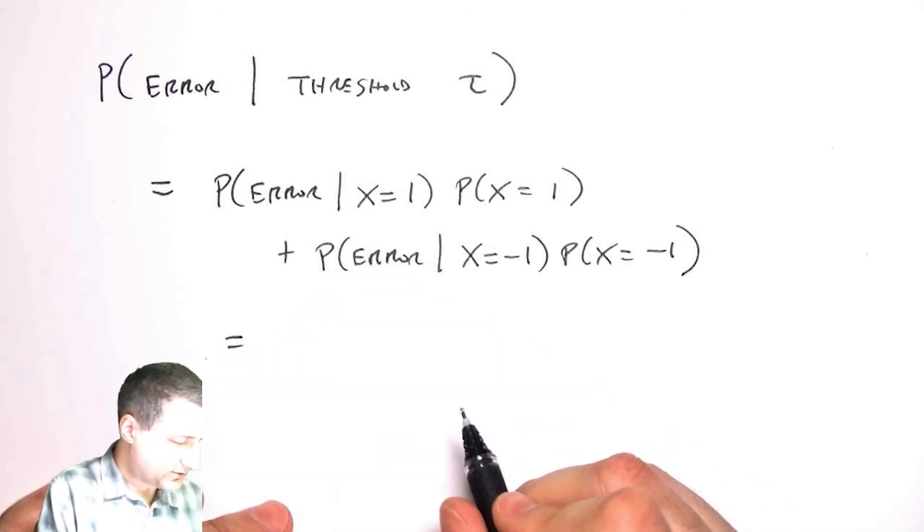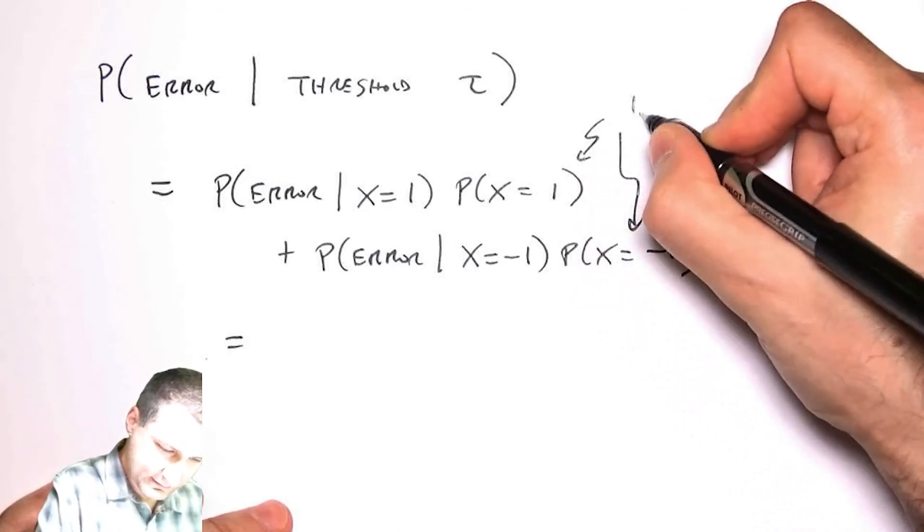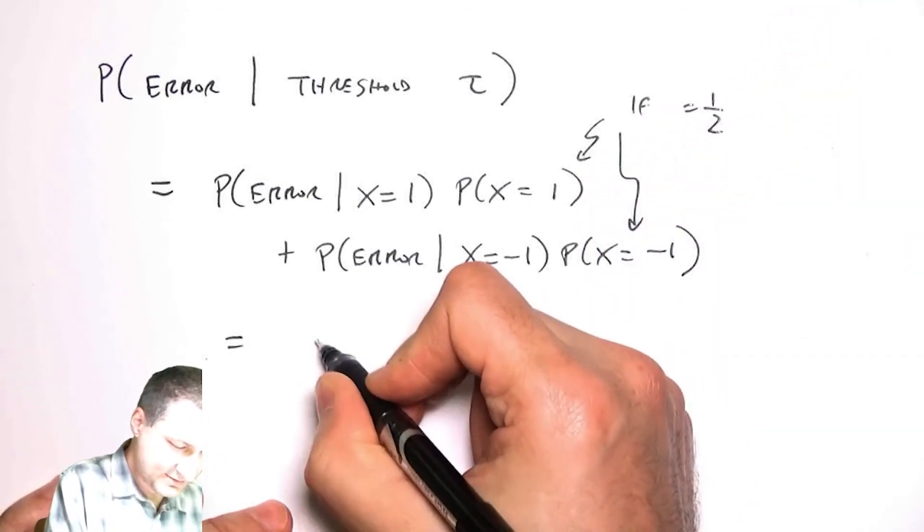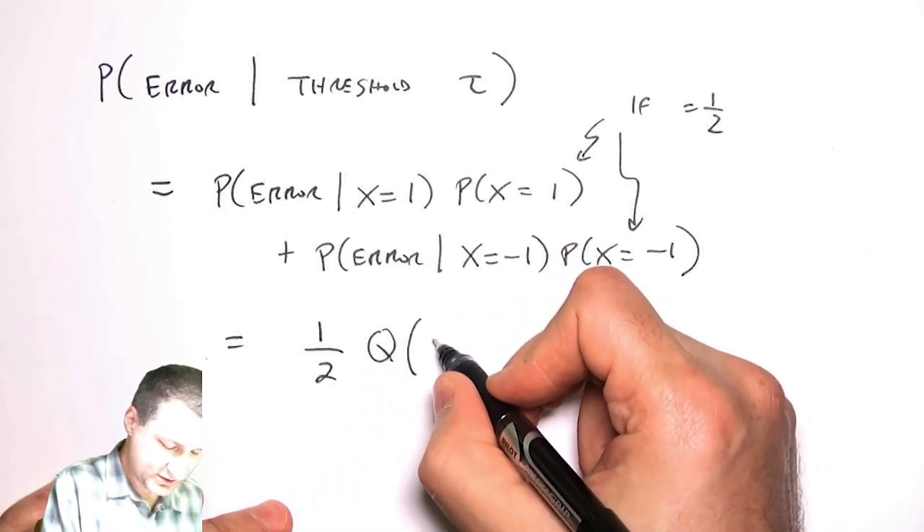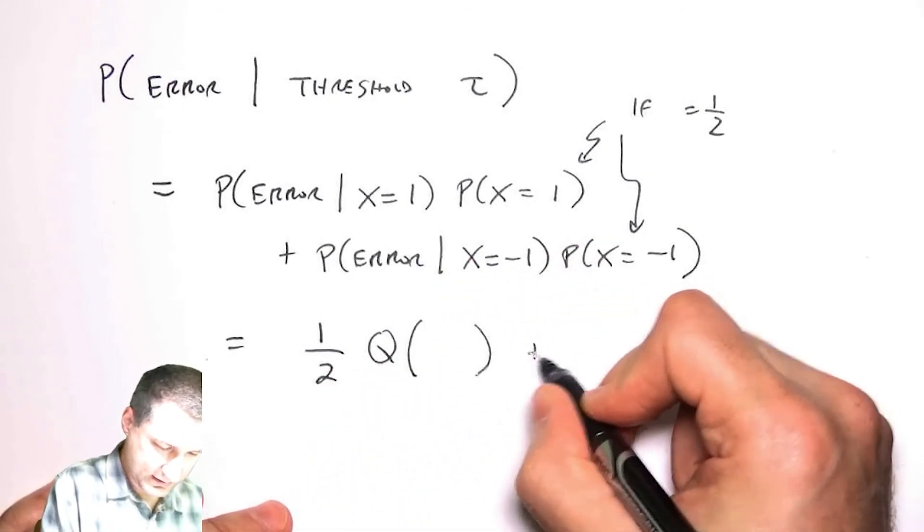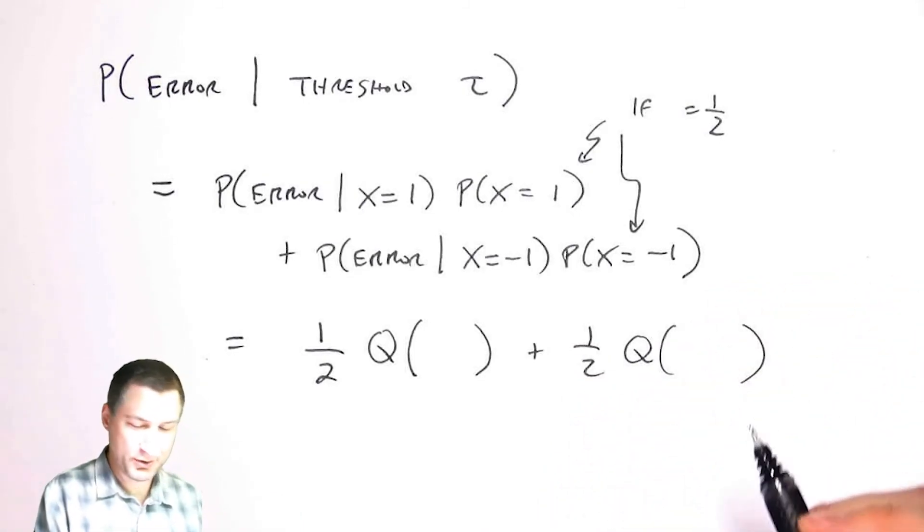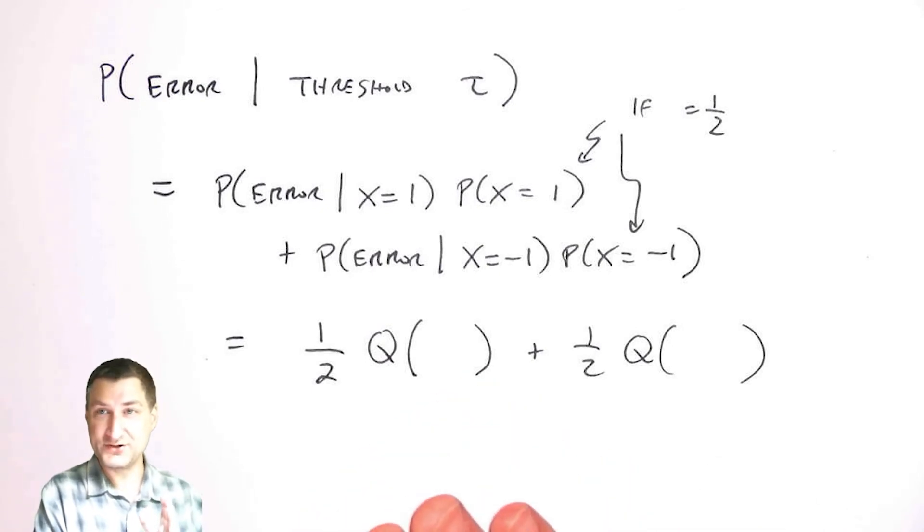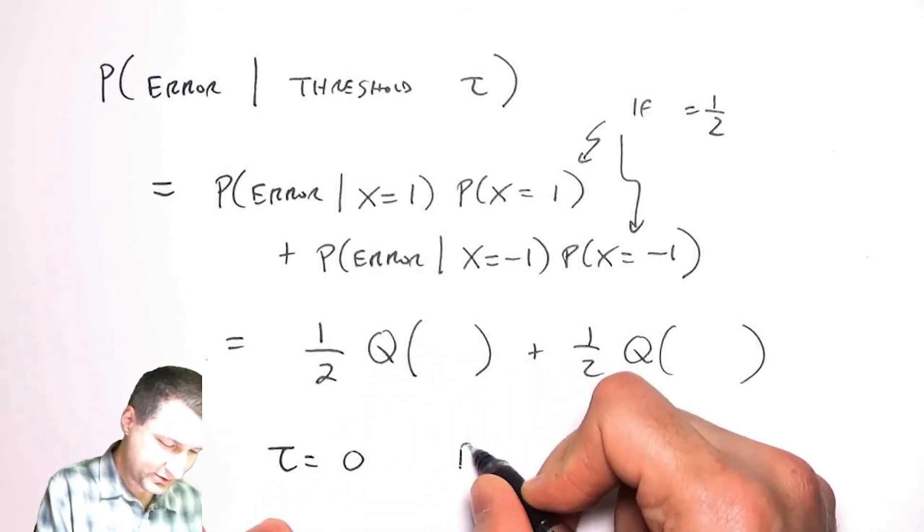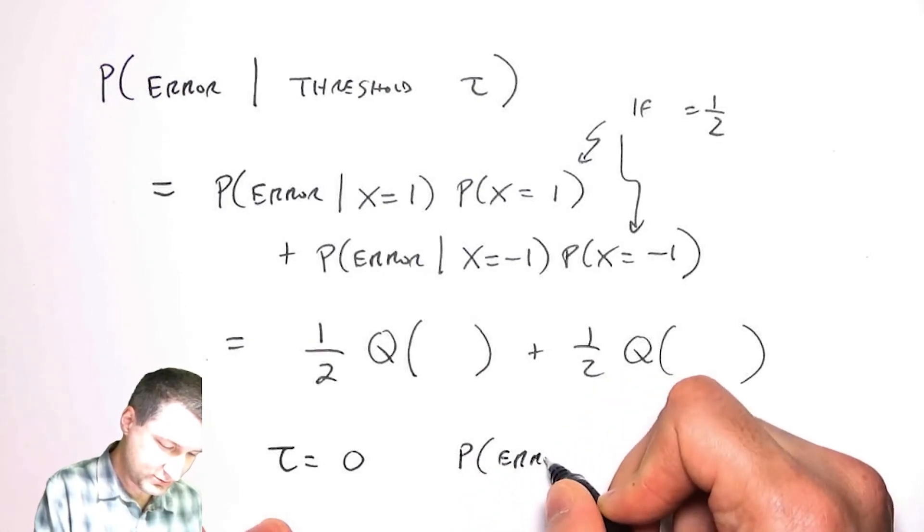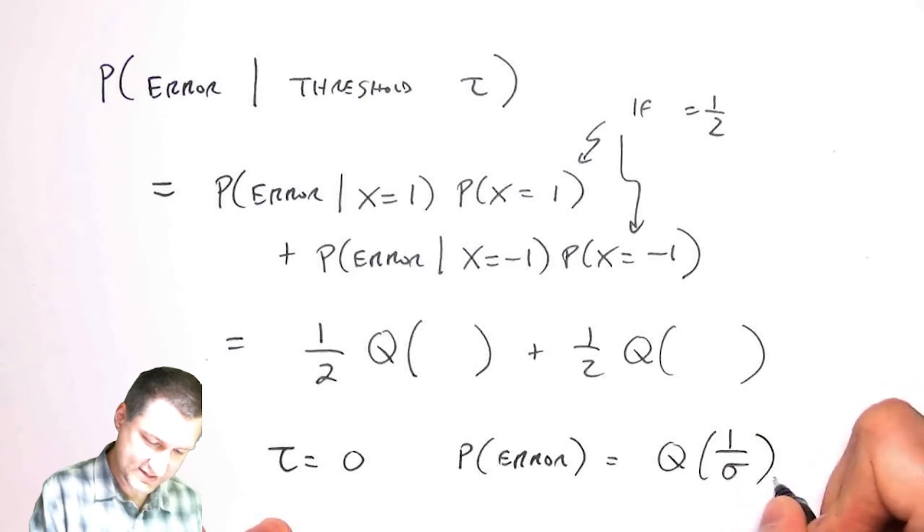Then I could work out, if these things are both equal to a half, then what I have is one half times a Q function here which is something, plus one half times a Q function here which is something else. So if both of the probabilities are equal then it makes most sense to put tau in the middle, and then my probability of error would be equal to, you can show, the Q function of one over sigma is how much is under the curve.